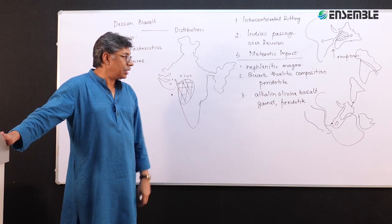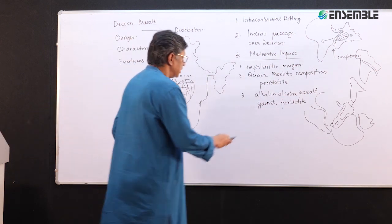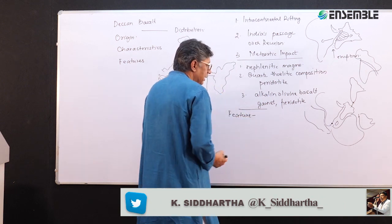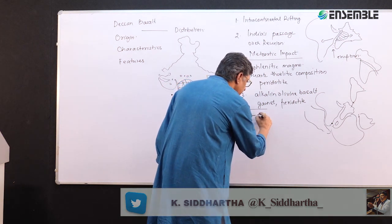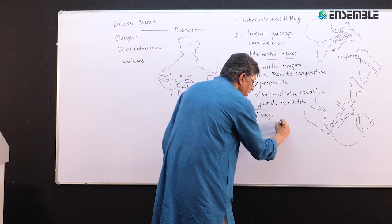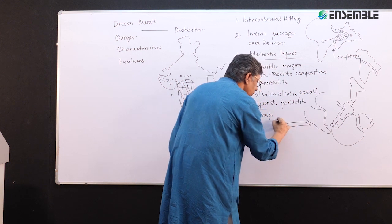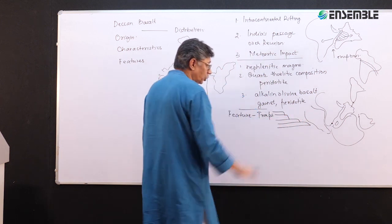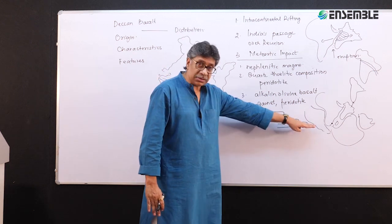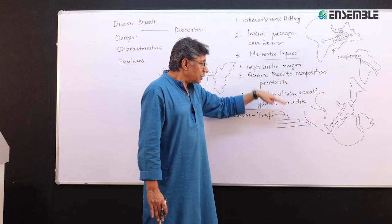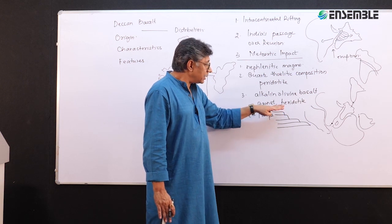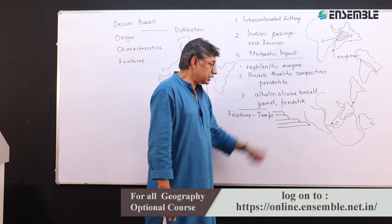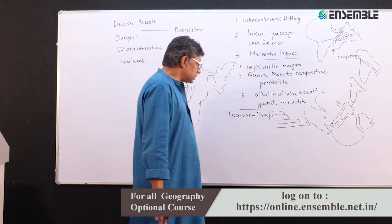The geological feature is that these deposits were laid down layer after layer, which is why they are called traps. After one volcanic eruption there was another, then another. Each succeeding lava flow was shorter than the previous — the first was most extensive, the second less so, and so on. This led to the evolution of step-type trap deposits, which is geological feature number one.